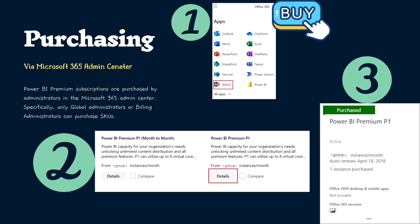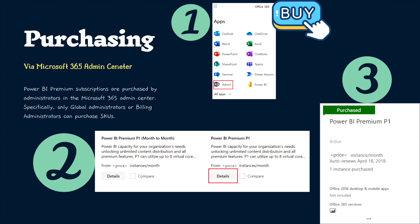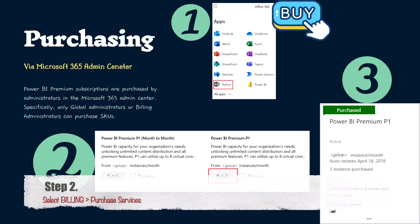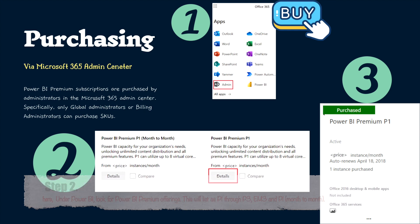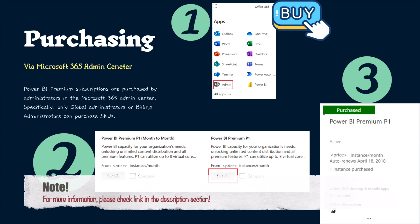As you can see on my screen, to purchase you need the Microsoft 365 Admin Center and must be a global admin or billing admin with the appropriate permissions. In step one, click on Admin. Then go to the Billings section where in step two you will see Power BI Premium P1 month-to-month or Power BI Premium P1 yearly options. Select the details and purchase accordingly, and in step three you will have purchased Power BI Premium P1. I'll also provide a link in the description where you can check this in more detail.